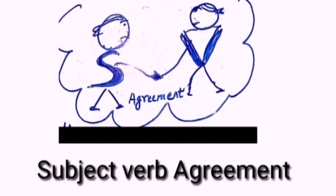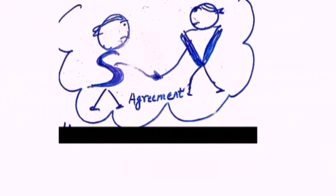Subject verb agreement in English grammar simply means that subject of a sentence must agree with its verb in number and person. Suppose, if the subject of a sentence is singular, its following verb should also be singular.